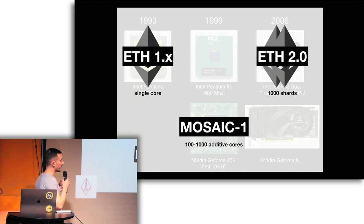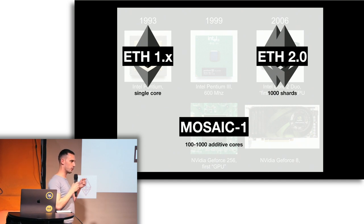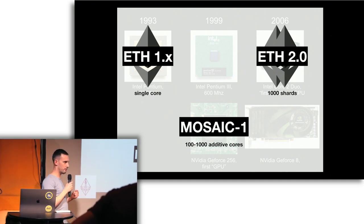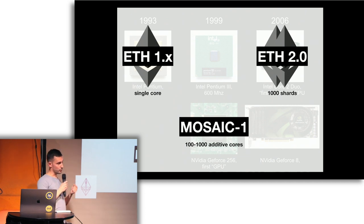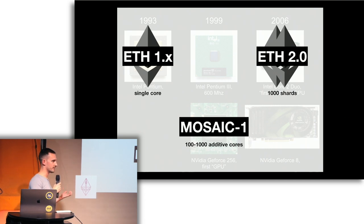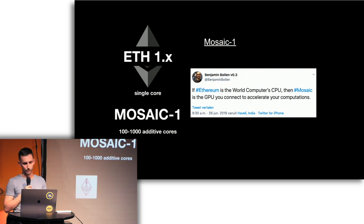This analogy also nicely illustrates how the design philosophy is different. dApps for Ethereum 2.0 don't have to care about which shard they're executing on, which is somewhat similar to a multi-core processor. Whereas if you want to code for a GPU, you have to explicitly write your program to use the video card capabilities. Similarly, if you want to write your dApp to use Mosaic, you'll have to write additional contracts — but it might be worth it for some use cases. My claim is: if Ethereum is the world's computer CPU, then Mosaic is a GPU you connect to accelerate your computations.